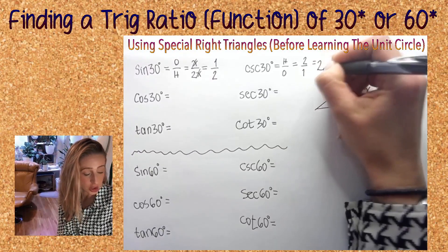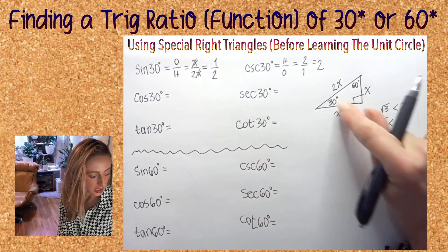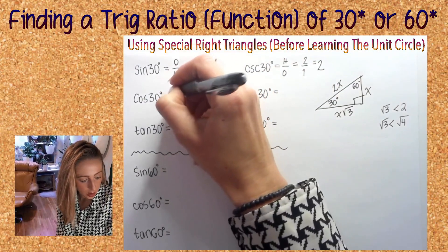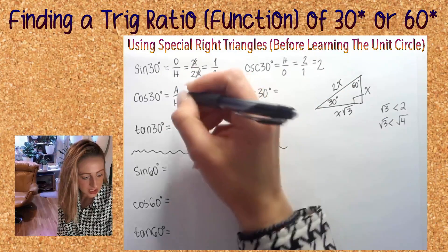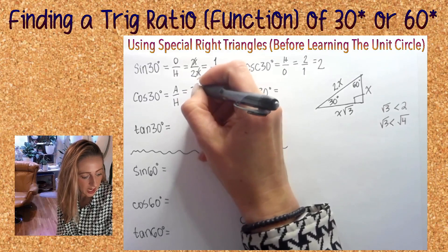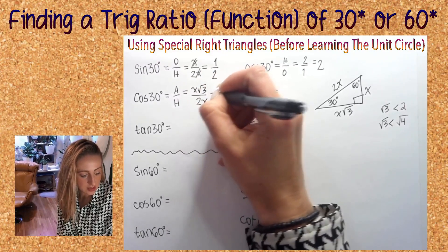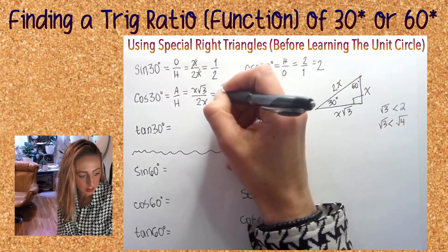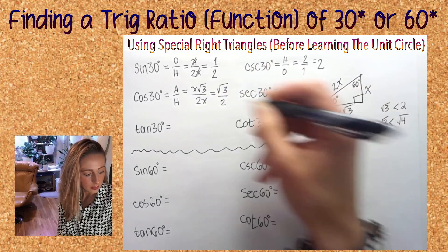Cosine of 30: what's the ratio that we need? Adjacent over hypotenuse. That's going to be x root 3 over 2x. Reduce the x's, not cancel, not make zero. Simplify: radical 3 over 2.